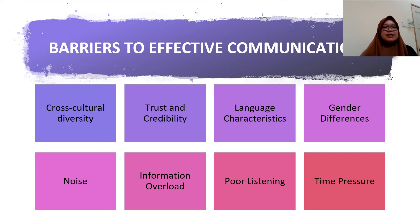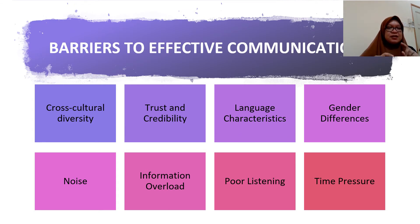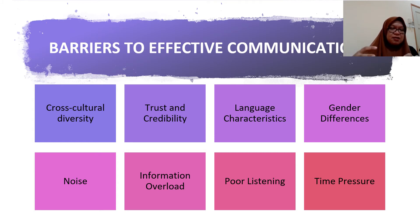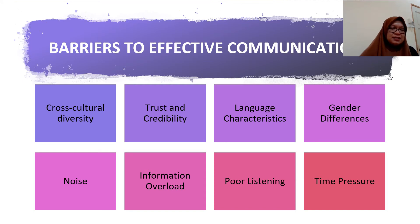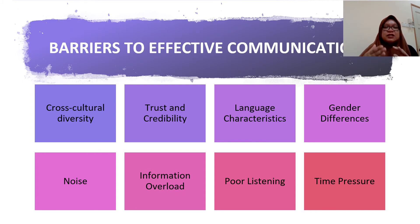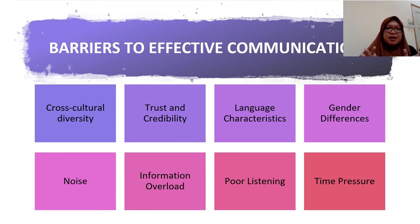Next, barriers to effective communication. There are barriers that occur during the communication process. Effective communication means the sender sends a message and the receiver gets exactly the meaning the sender intended. If the sender fails to send the message or the receiver doesn't understand, it is not effective. The receiver must get and understand the message for communication to be effective.